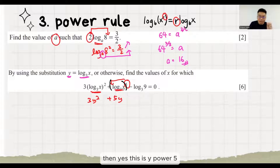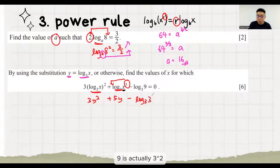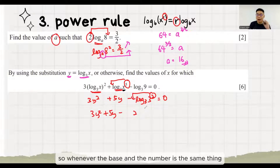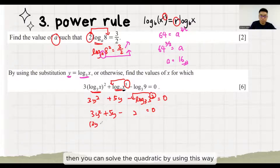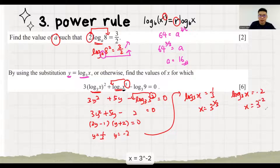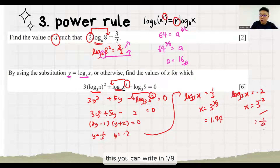Here is just log base 3 to the power 9. 9 is actually 3 power 2. This 2 you can throw down also. Then log base 3 of 3 is actually just 1. So whenever the base and the number is the same thing, you can remove it. Then you can solve the quadratic. Y equals 1 over 3, Y equals minus 2. Y is log base 3 of X. X is 3 to the power 1 over 3. X equals 3 to the power minus 2. You cannot leave your answers here because the question asks for the values. So values — your final answer must be in decimal. So 1.44. This you can write as 1 over 9. Ensure that the value is clear, not left as 3 to the power 1 over 3.